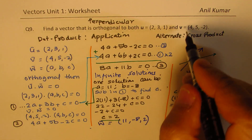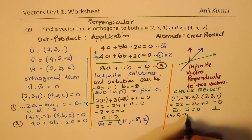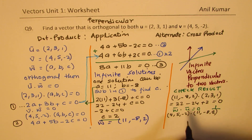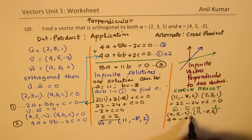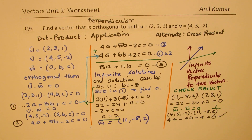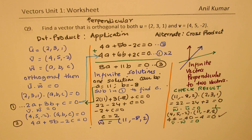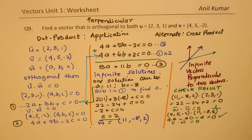We can do the same test with v: (4,5,-2) dot (11,-8,2) = 44 - 40 - 4 = 0. This also confirms that v dot w = 0. So it's important to understand there could be many solutions; we estimate one value, figure out another, then substitute to get the third. We can get many perpendicular vectors to two given vectors.